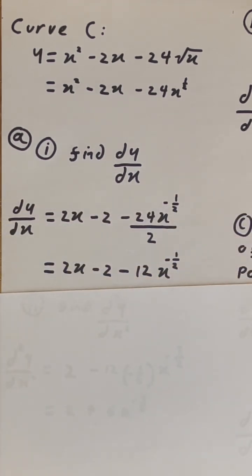x squared becomes 2x, 2x becomes 2, and 24x to the power of half becomes 12x to the power of negative half.